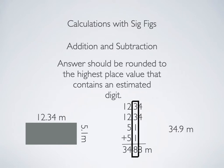For the geometric calculations... We're still on arithmetic here, addition and subtraction. This is the other way to think about it. Your answer should be rounded to the highest place value that contains an estimated digit.